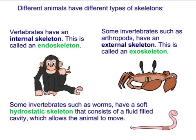Vertebrates have that internal skeleton — the endoskeleton — which is made out of bone and is very hard. Some invertebrates such as arthropods have an external skeleton called the exoskeleton. Some invertebrates such as worms have a soft hydrostatic skeleton that consists of a fluid-filled cavity which allows the animal to move. Basically it's just filled full of water — hydro — and it uses that pressure to fill up.